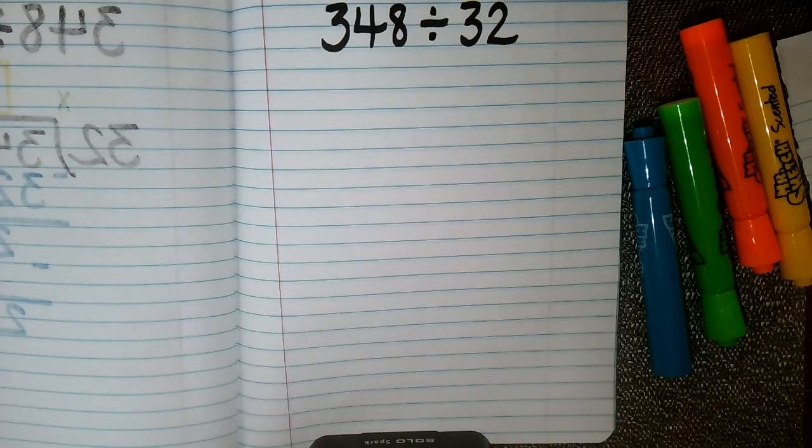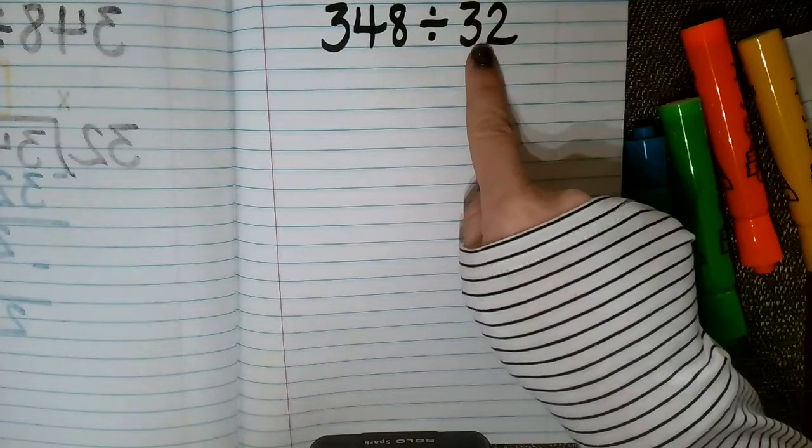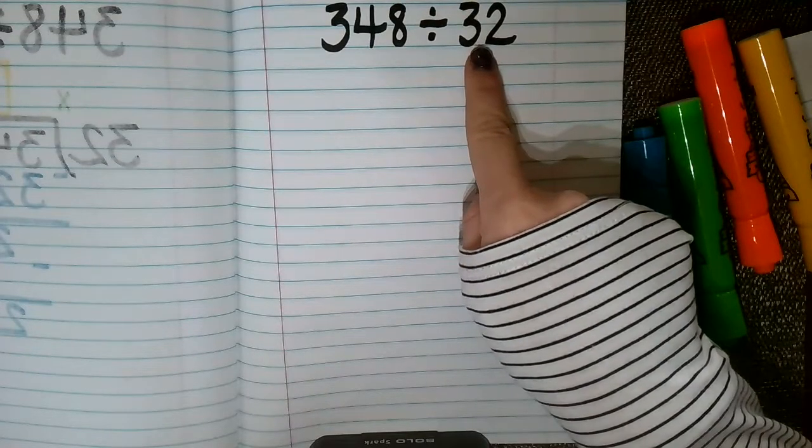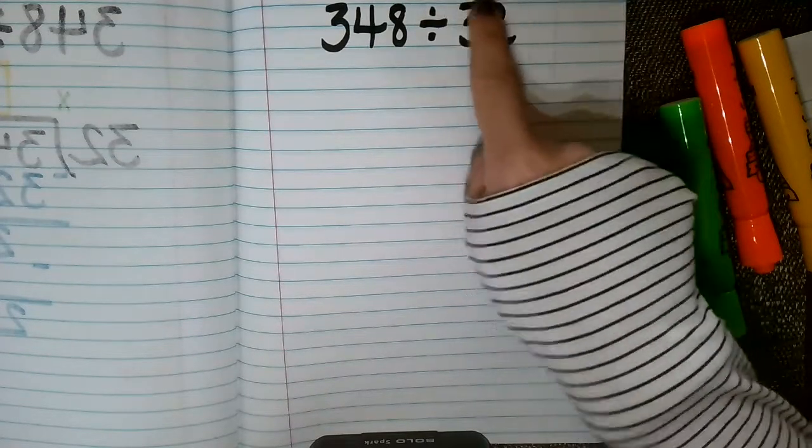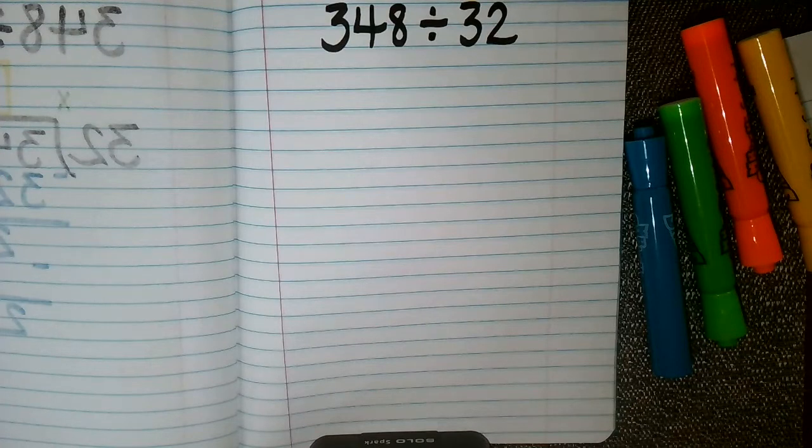So this division strategy is going to be called repeated subtraction, and all that means is that we are going to take our dividend and repeatedly subtract our divisor because we want to figure out how many groups of 32 fit into the number 348. If you are familiar with the multiplication strategy of repeated addition, this strategy is going to be just the opposite.